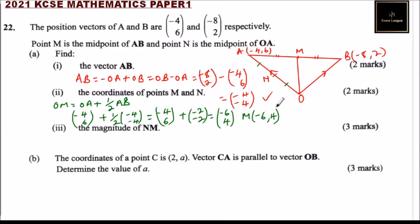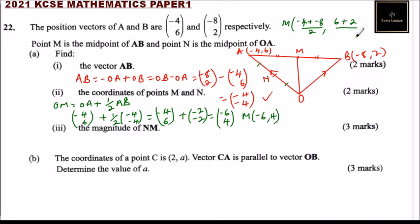Alternatively, using the midpoint coordinate formula: M = ((-4 + (-8))/2, (6 + 2)/2). That is (-12/2, 8/2) = (-6, 4). This is an easier way of getting the coordinates.